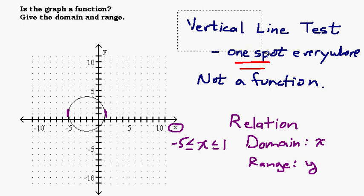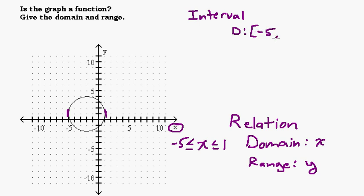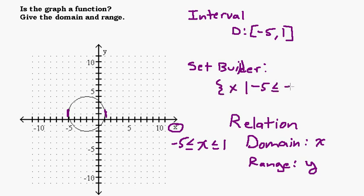Let's talk about some different ways to write the domain. In interval notation, the domain would be the interval from negative 5 up to positive 1, using brackets since both endpoints are included: [−5, 1]. In set builder notation, it would be the set of all x such that negative 5 is less than or equal to x is less than or equal to 1.